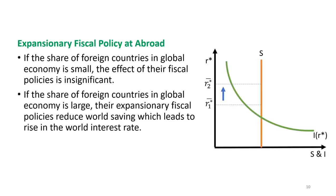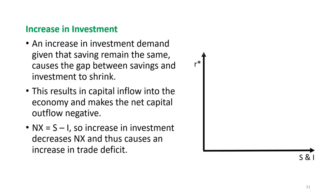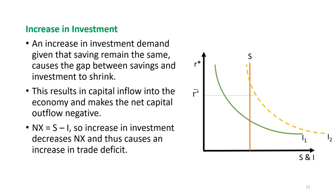Next is the increase in investment. An increase in investment demand — for example because of a reduction in corporate taxes or tax credits to producers — given that saving remains the same, causes the gap between saving and investment to shrink. Some of the increased investment may be financed by foreign capital, resulting in a capital inflow into the economy and making net capital outflow negative. In other words, since net exports equal saving minus investment, an increase in investment decreases net exports and causes an increase in trade deficit.